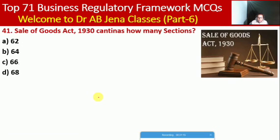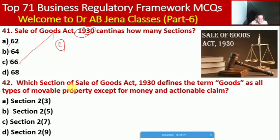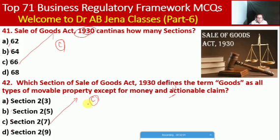Next MCQ: the Sale of Goods Act, friends — you have to remember 1930 — contains how many sections? Whether 62, 64, 66, or 68. Here C is the right option — 66 sections. Next MCQ: which section of the Sale of Goods Act 1930 defines the term 'goods' as all types of movable property except money and actionable claims? Whether Section 2(3), 2(5), 2(7), or 2(9). Here C is the right option — Section 2(7).